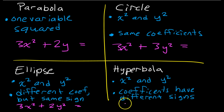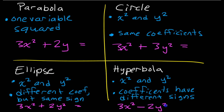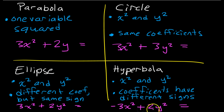If the coefficients of the x squared and y squared have different signs, then it's going to be a hyperbola. For example, if I had 3x squared minus 2y squared, that would make this a hyperbola. Or if it was negative 3x squared and a positive 2y squared — if the signs are different, that automatically makes it a hyperbola.